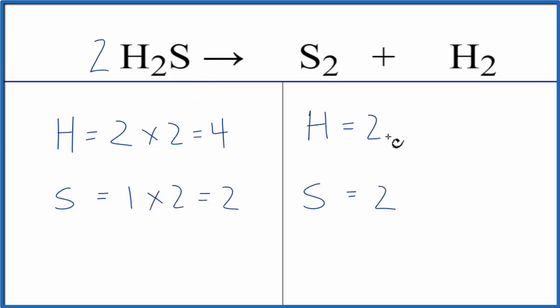So we've fixed the sulfurs, and now the hydrogens, we need to balance those. That's not too bad, we need four and we have two. So two times two, that would give us four. Put a coefficient of two in front of the H2.